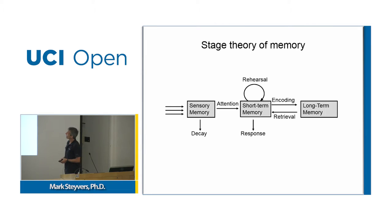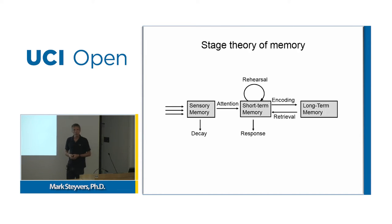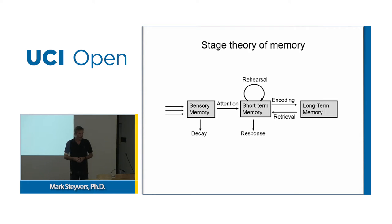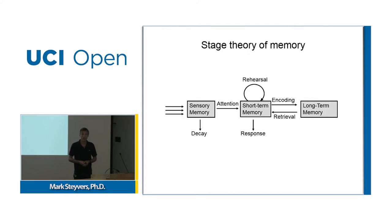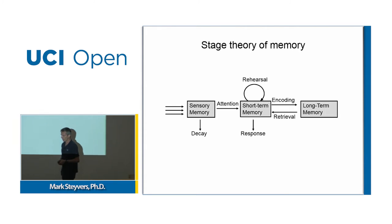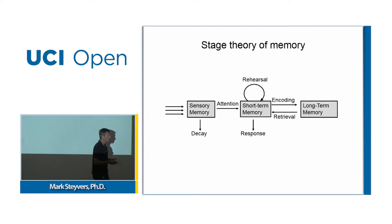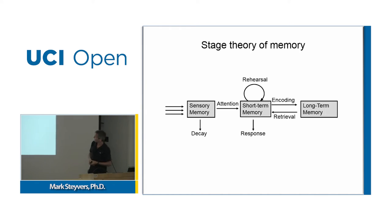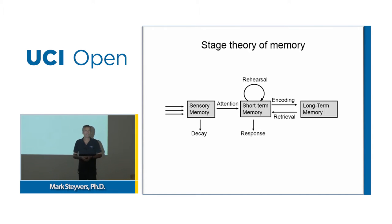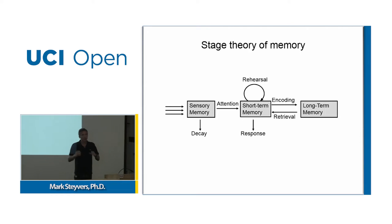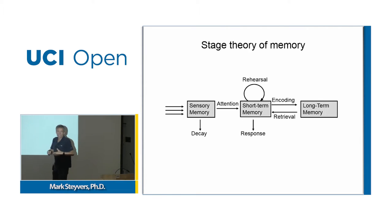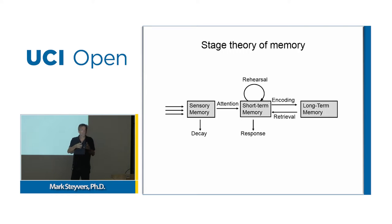Here's the famous stage theory of memory, also called the modal memory model. It was developed in the 1960s and 1970s by my PhD advisor, Rich Shiffrin, as well as Dick Atkinson — who later became the chancellor of the University of California. This is known as an information processing theory, meaning you have a very precise theory that states exactly how information is represented, where it's represented, and how it flows from one part to another.